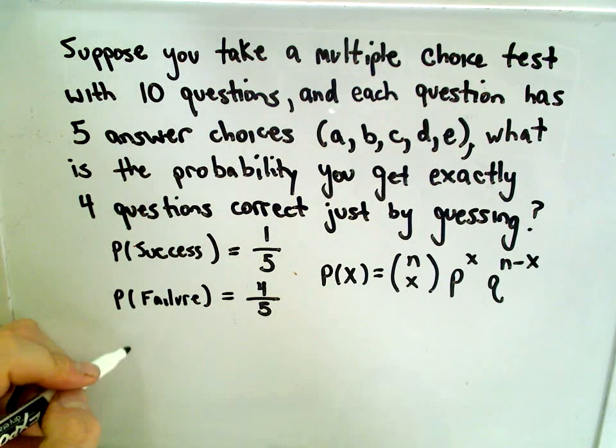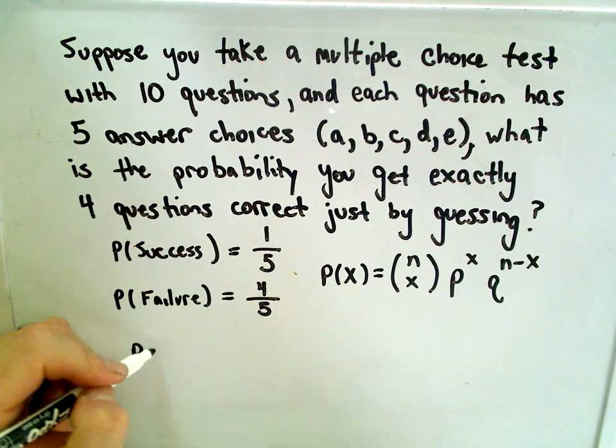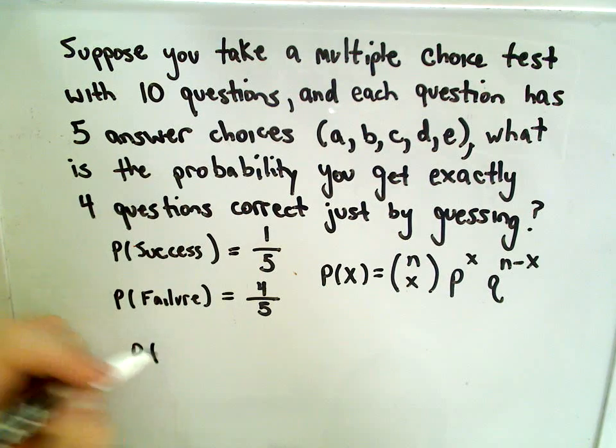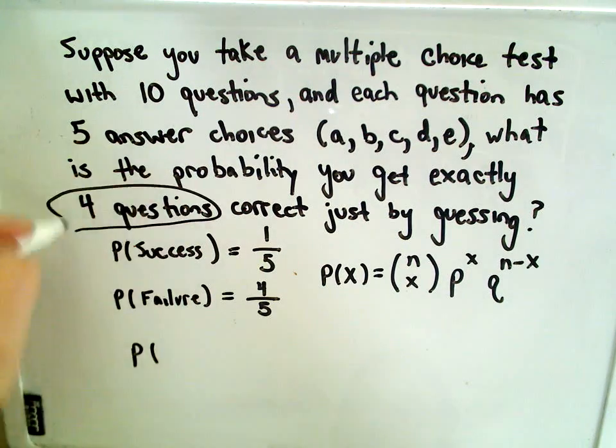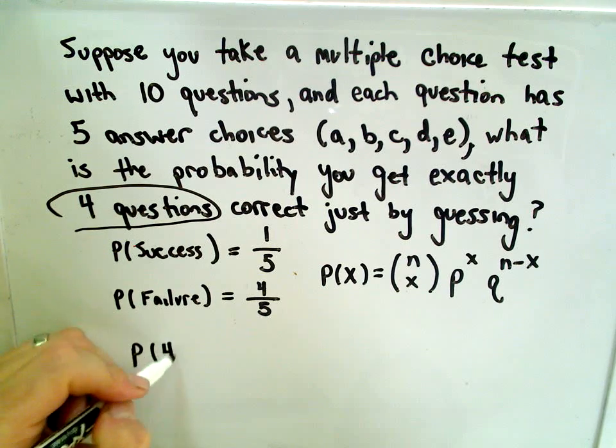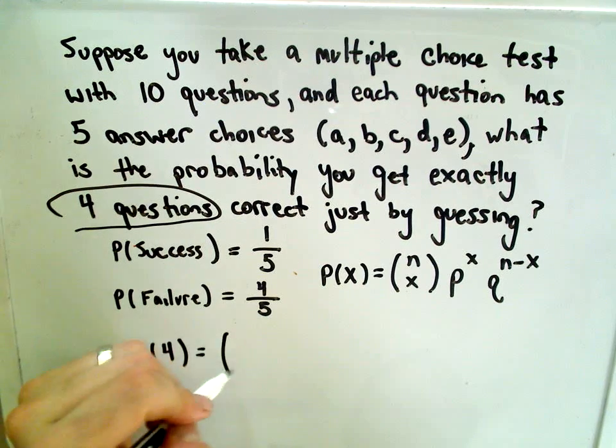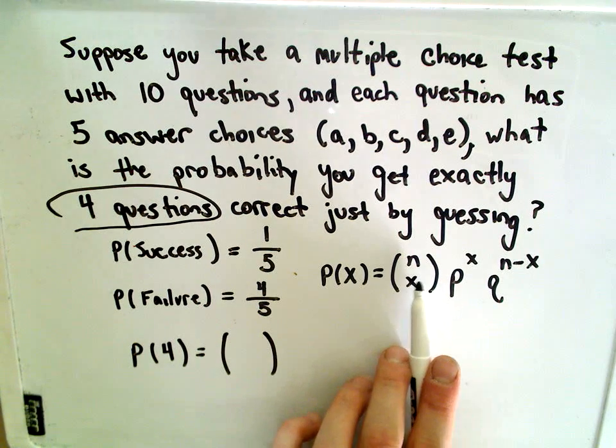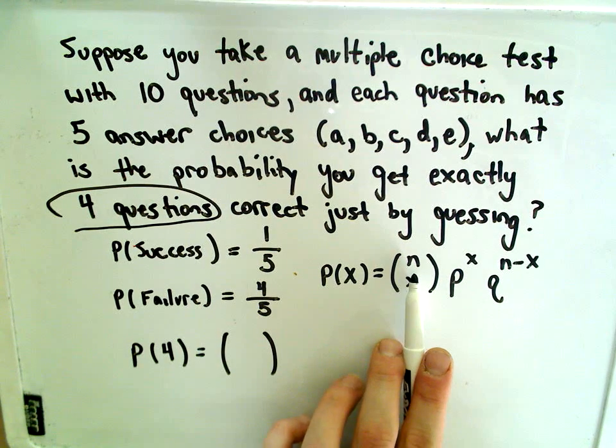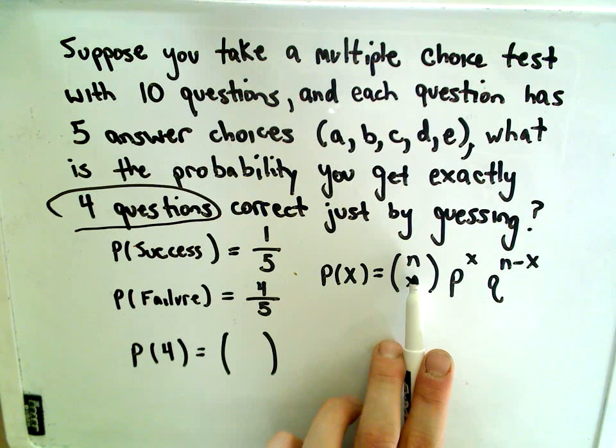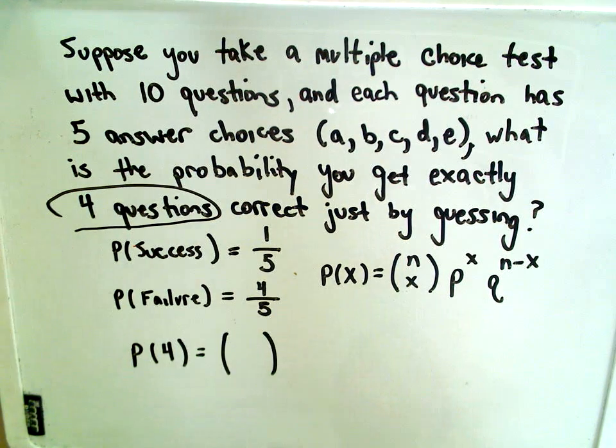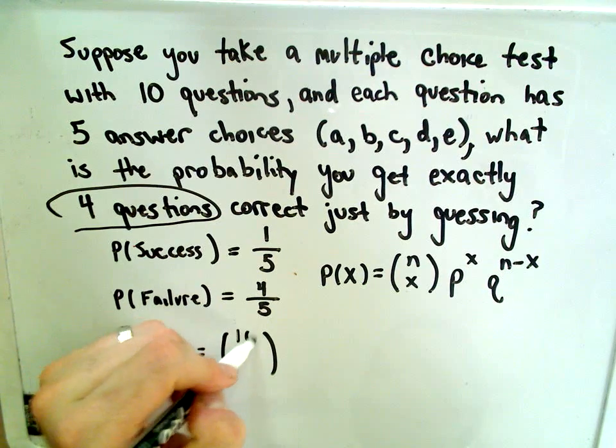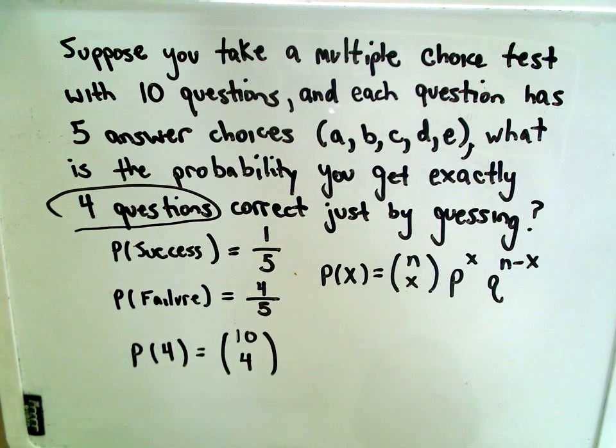So in this case, we want to find the probability of us finding exactly, so we said four questions correct. So we'll plug four in. Okay, and this is where we have to be a little careful. So I'm just plugging everything in correctly. So n is the total number of trials, or in this case, it's the total number of questions that you have to answer. So there's ten questions total, and we want to answer four of those correctly.